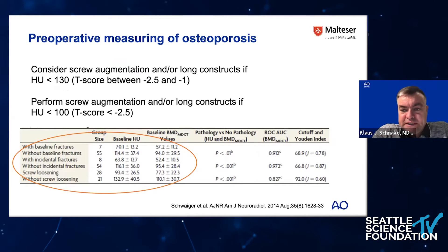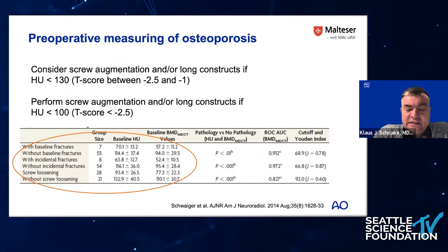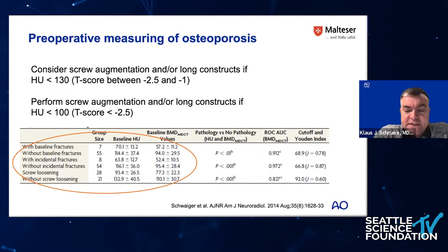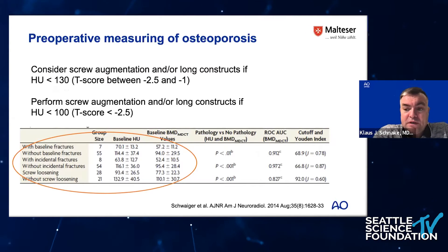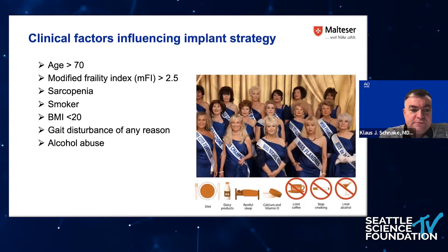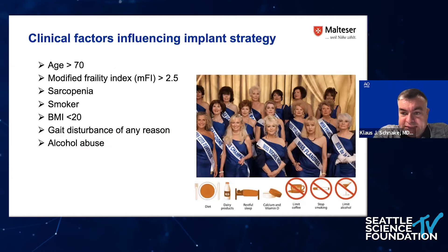We advise considering screw augmentation or, as an alternative, a long construct if Hounsfield units are below 130 — meaning the T-score is somewhere between minus 2.5 and minus 1. We would definitely advise screw augmentation or a long construct if Hounsfield units are below 100, as this may help you avoid screw loosening. That is the first take-home message. Also, don't look only at the T-score but at the patient themselves.